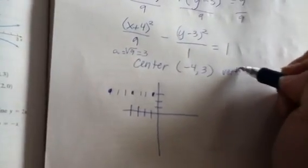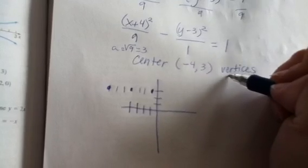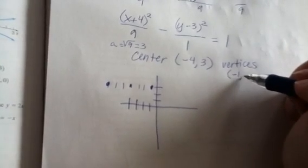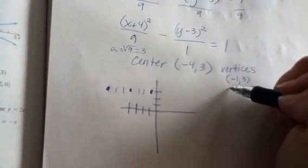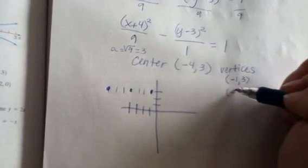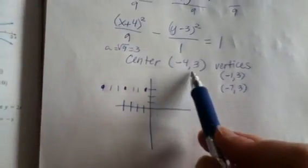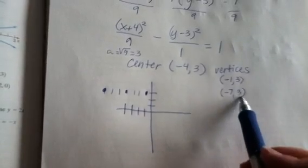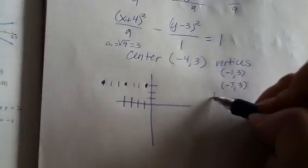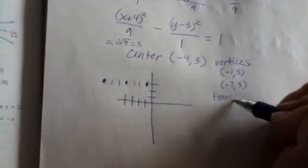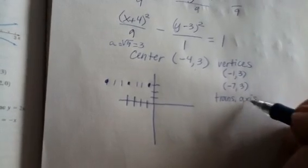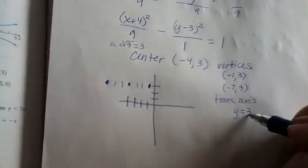The vertices are at (-1, 3) and (-7, 3), correct? So if the center is at (-4, 3), notice how they all have the number 3 in common. That's because our transverse axis is at y equals 3. So they all are going to have that value.